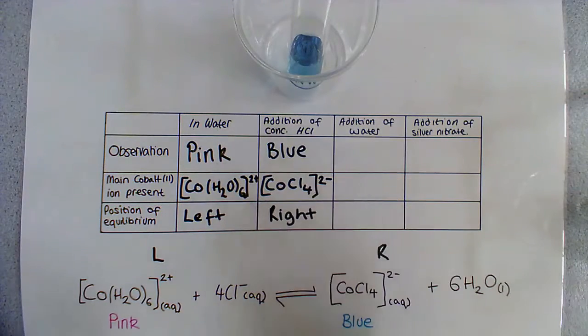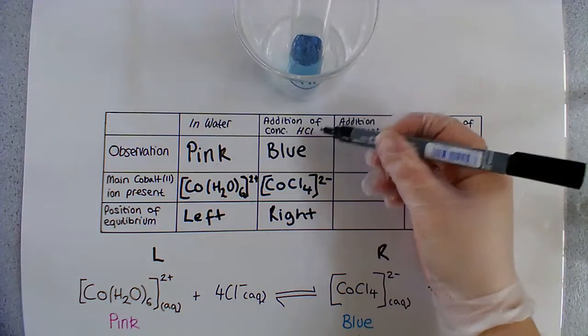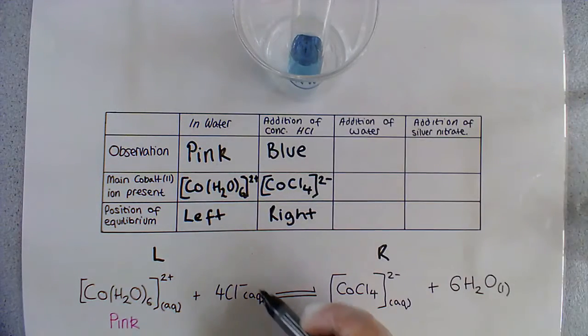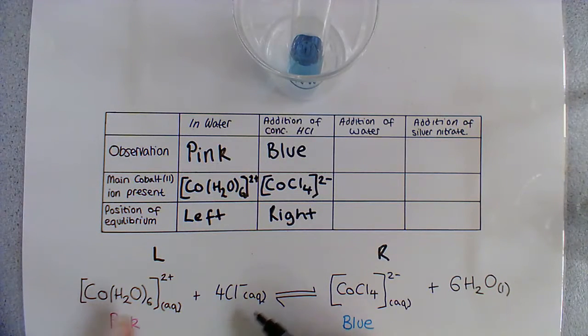So why has the equilibrium shifted to the right-hand side? The reason for this is when we add our concentrated hydrochloric acid, we are adding chloride ions. These chloride ions react with the cobalt-hexa-aqua complex and they make more of our cobalt(II) chloride, thus pushing the equilibrium to the right-hand side.